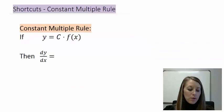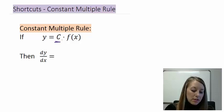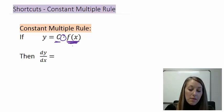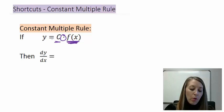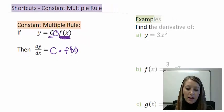The next rule that we have is y equals c times f of x. This is called the constant multiple rule because we have a constant multiplied by some other function. When we take the derivative of this, we just pull the constant outside and then take the derivative of our function. So our constant gets pulled outside times the derivative of our function, f prime of x.